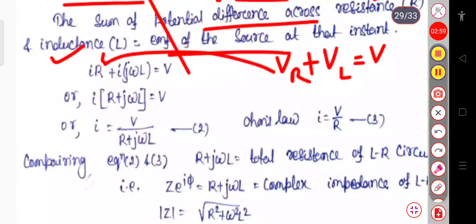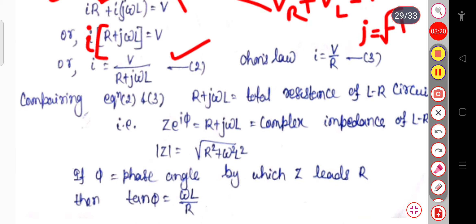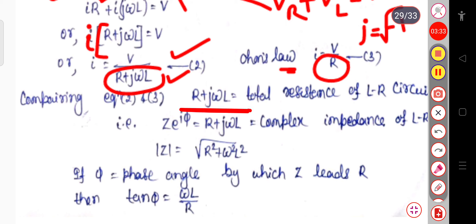Taking i as common, this becomes i(R + jωL) = V. Therefore i = V divided by (R + jωL). Comparing with Ohm's law, I = V/R, the total resistance of this LR circuit is R + jωL.